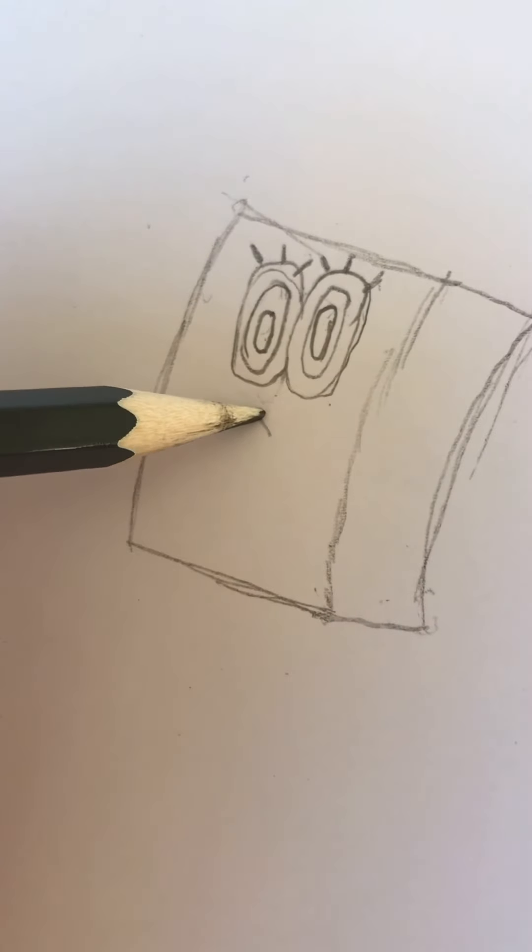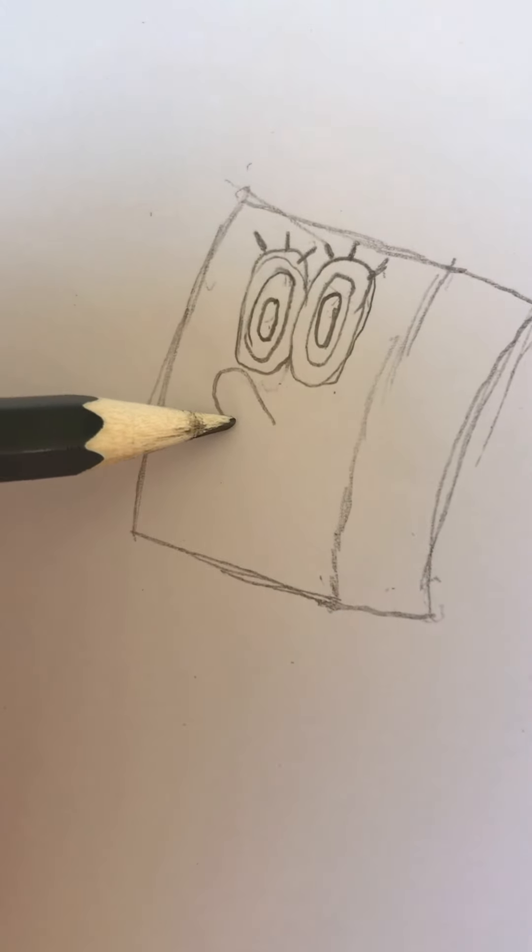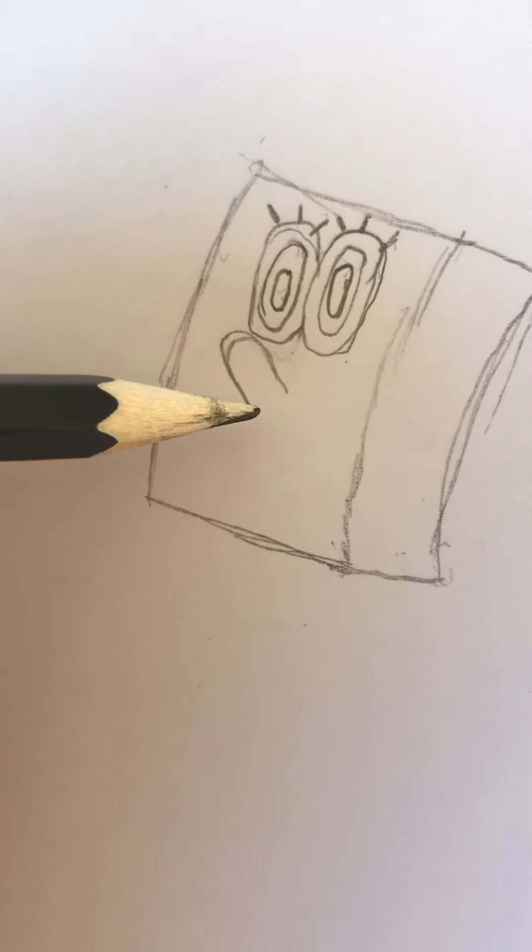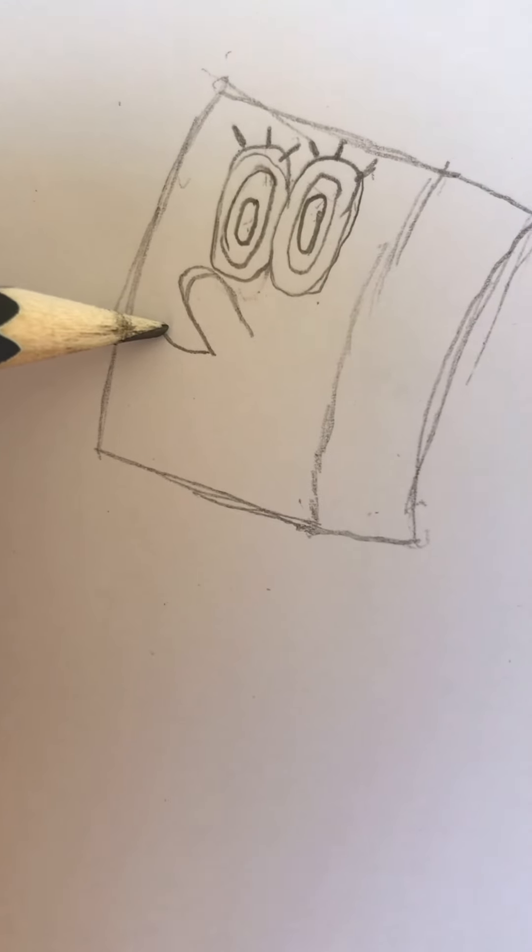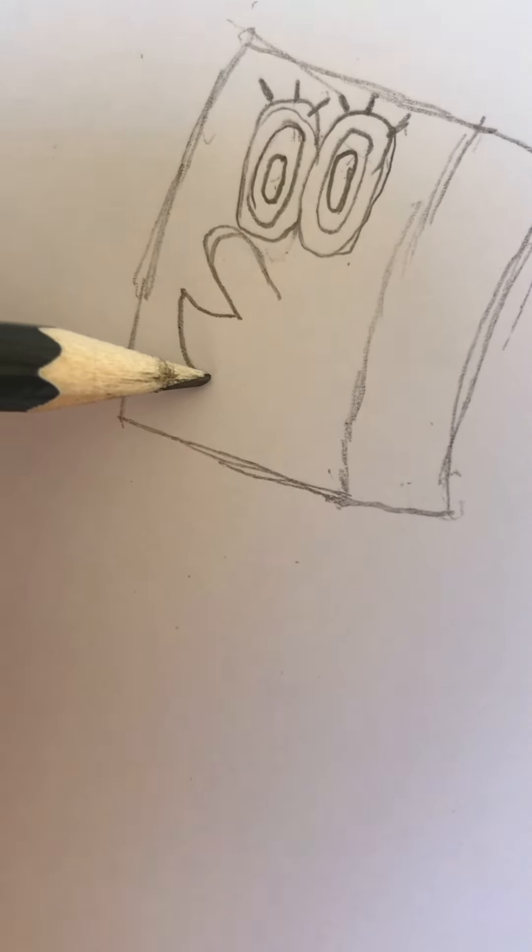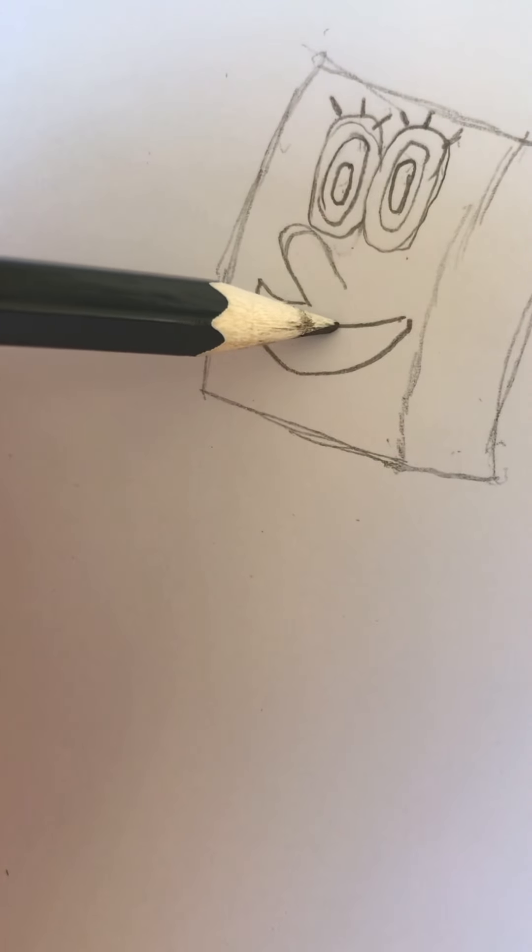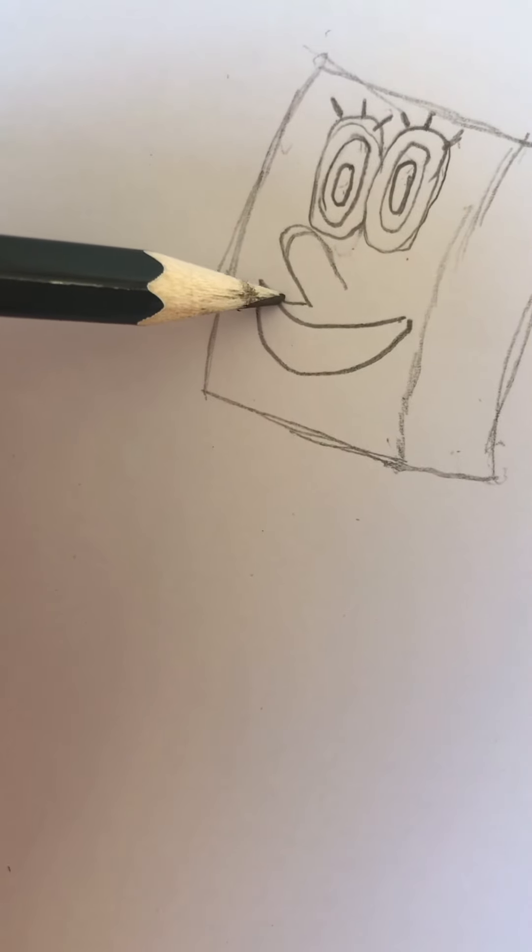Next, do a curve kind of thingy like that. But like way skinnier. Then from there, you want to do a curve like that. Then join down. Then back up. Then join that to here.